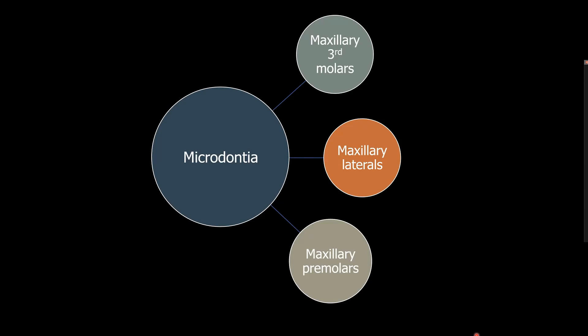Microdontia can happen in several teeth. Most common is the maxillary third molars, as we have seen in our bitwing radiograph, followed by maxillary laterals, and then followed by maxillary premolars.